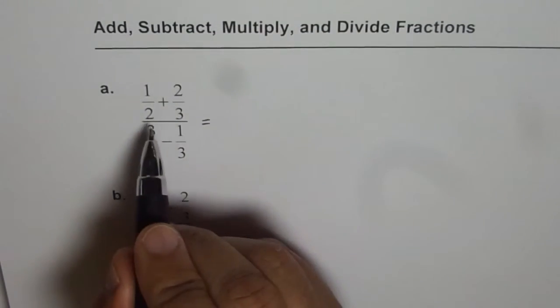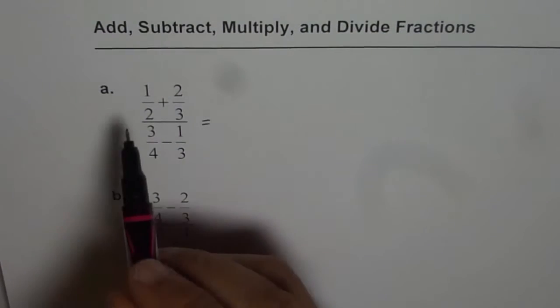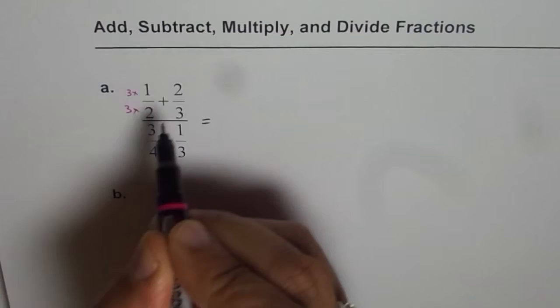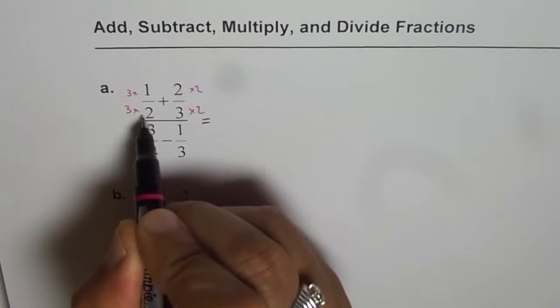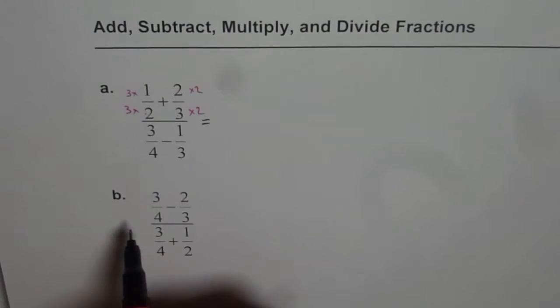Now to add the numerators we need common denominator which we can get by multiplying the first one by 3's and the other one by 2's. Let's cross multiply.